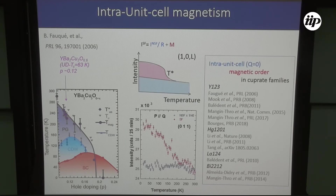We observed the signal not only in YBCO but also in other cuprate families, like single-layer mercury compounds — Hg-1201 and Hg-1212 — at around 12% doping. Once again, the magnetic signal is observed on specific reflections.